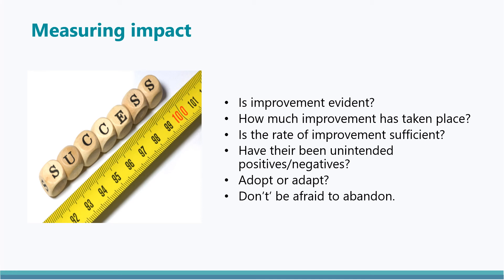Thinking now about monitoring and measuring the impact of interventions, this slide provides some questions for schools to use in their discussions. It's important to consider not only whether or not improvement is evident, but also whether the level of improvement is sufficient. Where there are concerns about the rate of progress, or indeed a lack of progress, schools should consider whether this is due to issues with the intervention itself or with how the approach or intervention has been delivered. Staff and/or pupil absence, prioritising other tasks over PEF interventions, and remit creep will all negatively affect the success of an intervention. Sometimes interventions can impact in ways not considered in the planning process, and schools should be alert to this.